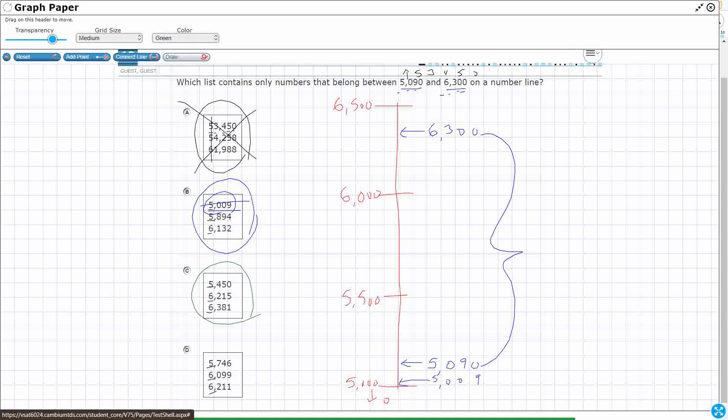Let's try this right here: 5,450. That's going to go like right about there, and that's going to work for me. So that works. 6,215, that's going to go right about there, less than 6,300. So that works. And then I've got 6,381. Oh, it's too much. Look, right above the 6,300. So it's that last one that's not going to work.